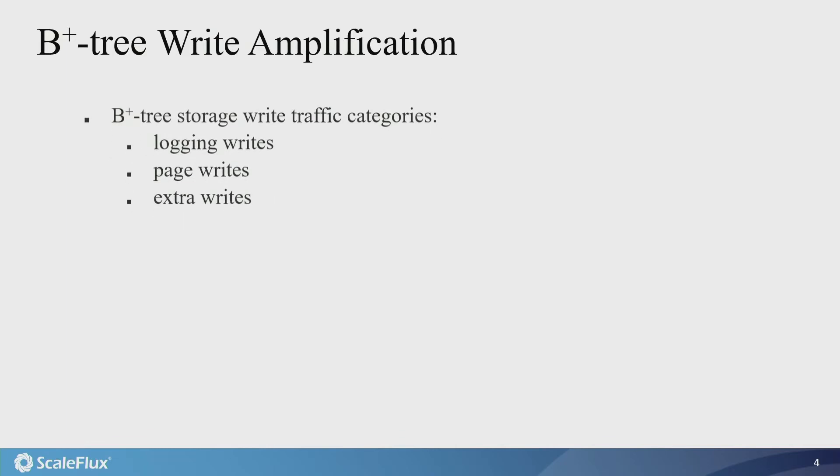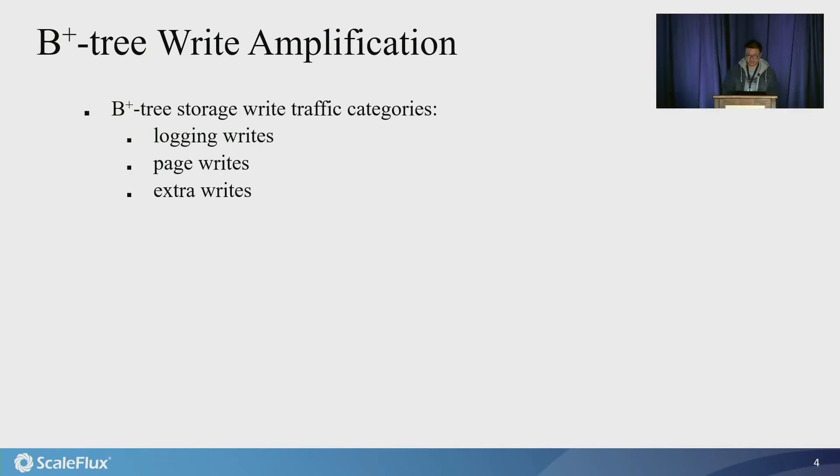So we could classify B+ tree storage write traffic into three categories. First, logging writes that ensure transaction atomicity and isolation. Second, page writes that persist in-memory data pages to storage devices. And third, extra writes that are induced by ensuring page write atomicity, like page journaling or page mapping table.